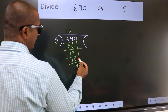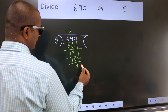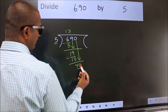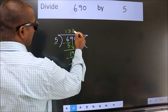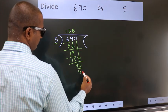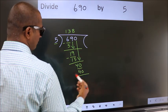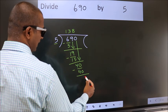After this, bring down the beside number. So, 0 down. So, 40. When do we get 40? In 5 table. 5 eighths, 40. Now, we subtract. We get 0.